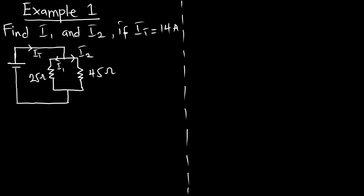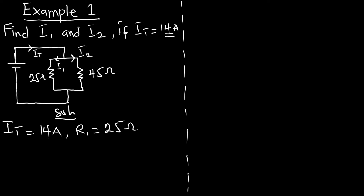Example one: find i1 and i2 if It is 14 amperes. We have a diagram where our total current from the source is 14 amperes and we have to find the current i1 in the first resistor and i2 in the second resistor. Our parameters: It equals 14 amperes, R1 for i1 is 25 ohms, and R2 for i2 is 45 ohms. We are good to use the current divider rule because we have two resistors in parallel.